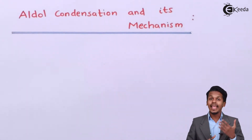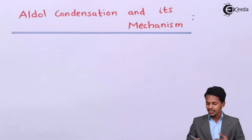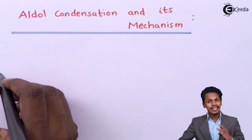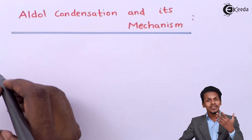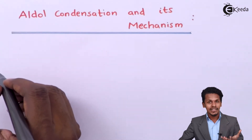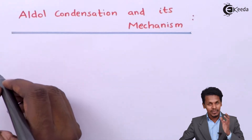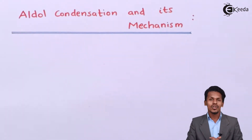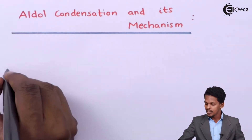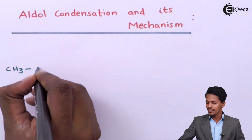Let me consider an aldehyde which consists of an alpha hydrogen atom. It undergoes self-condensation — for example, acetaldehyde reacts with another molecule of acetaldehyde in the presence of a strong base like NaOH, and the formation of aldol can occur.